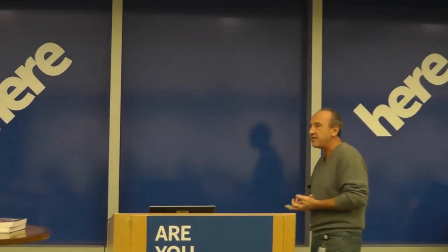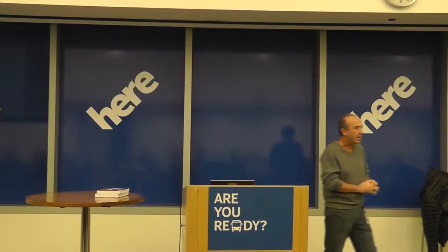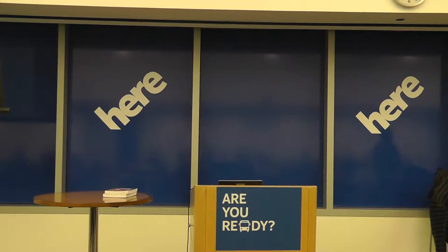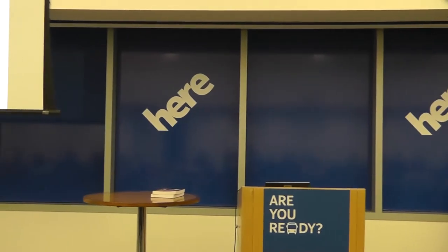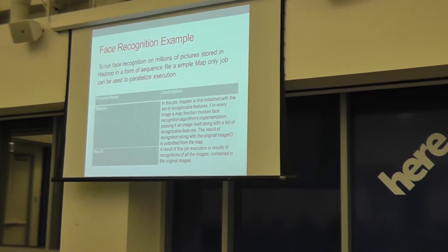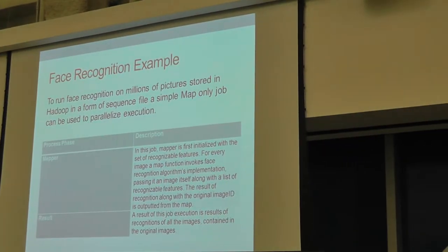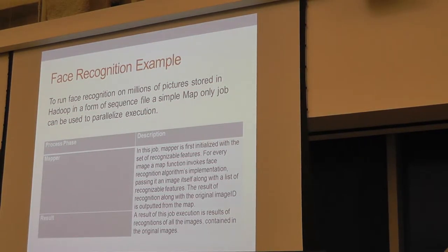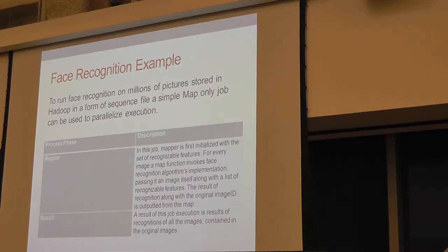Here is the first example which doesn't seem like a MapReduce example, but in reality anything that conforms to the rule of parallel processing can be converted to a MapReduce job. Here's a simple face recognition example: assume we have the algorithm for face recognition and need to run it on millions of pictures. Hadoop provides a simple way — just a mapper for the job. Your input format splits the images between as many mappers as you can start, and every mapper reads the image, does the face recognition, and spits out the result.